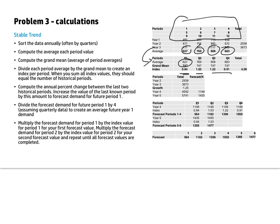You divide the average by the grand mean to come up with the index. If you've done the calculations right, those will sum to four because you have four periods. If there were flat demand, each index value would be one. But in this case quarter three is the biggest quarter — almost 25% larger than the average at 1.22 — so these index values reflect the seasonal shape of demand.